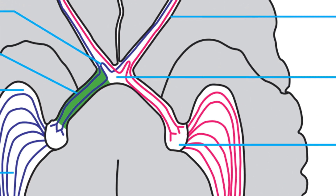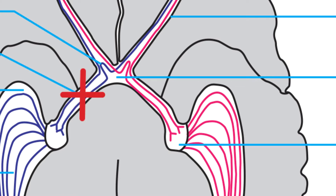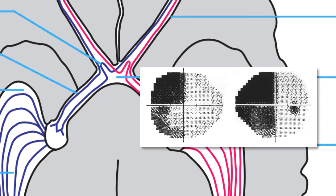In the optic tract, axons carrying visual signals from corresponding points in the two hemifields do not yet lie adjacent to one another. As a result, a subtotal lesion here will cause an incomplete homonymous hemianopia in which the defects in the visual fields of the two eyes will not resemble each other in size and shape.